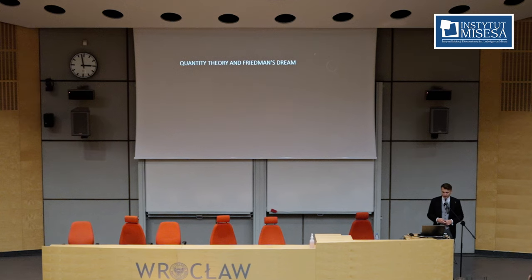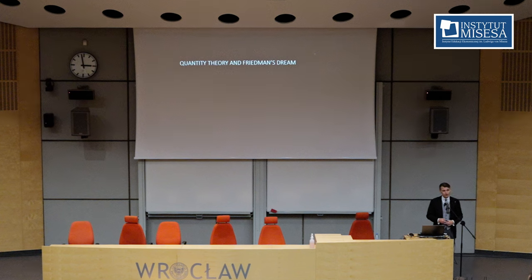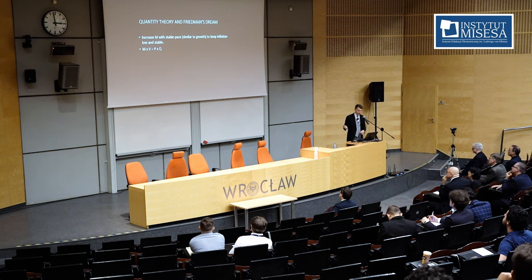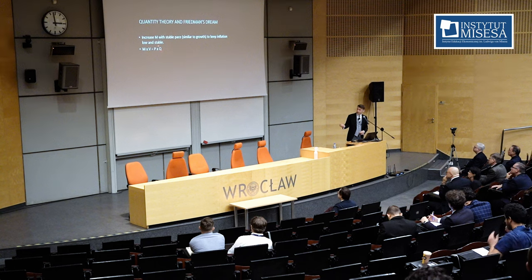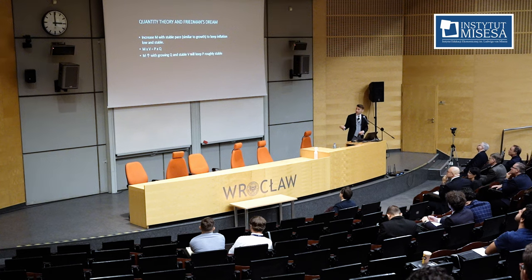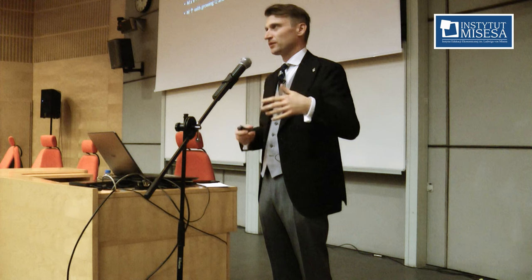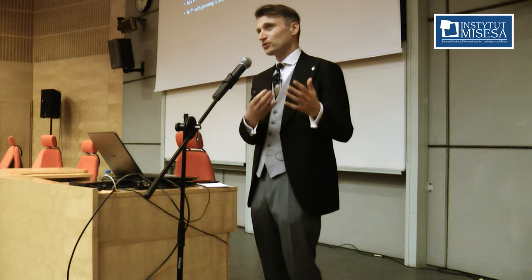Moving on. After the Second World War, Milton Friedman's idea for monetary stability appeared. He even wanted a highly regulated banking sector so that it would adapt to his planning scheme for monetary policy. The plan: increase money supply in circulation at a stable pace, similar to real economic growth, to keep inflation low and stable. When money supply increases at the same pace as real production, P should stay stable — assuming that V is stable. For many economists, Friedman's program was seen as the next level in the development of quantity theory of money.